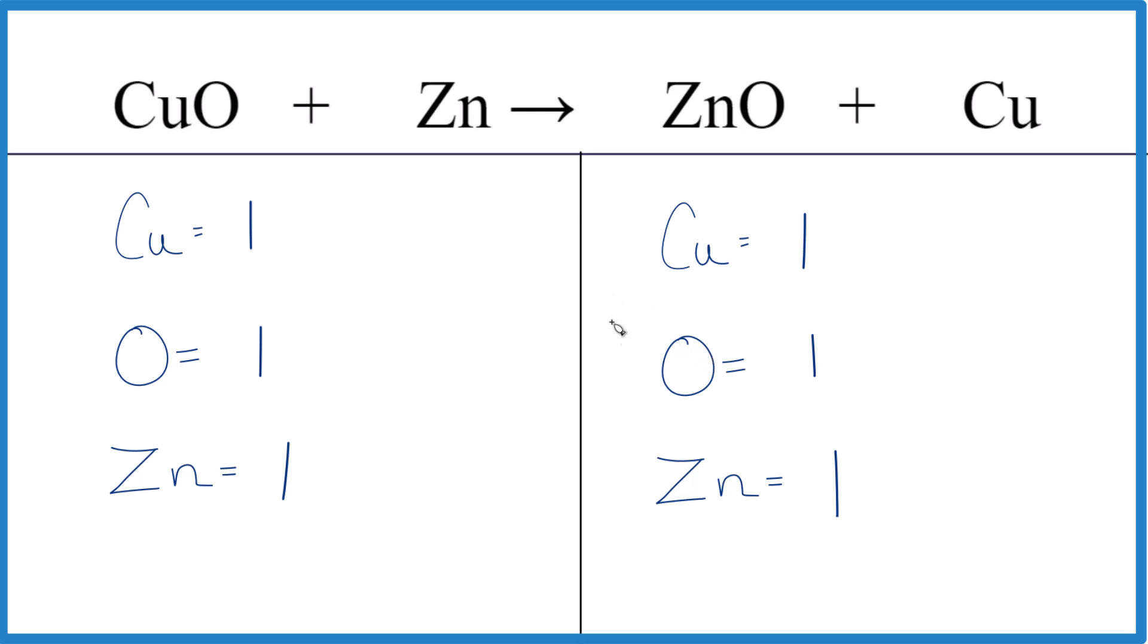If you want to look at it from the perspective of redox, let's write the oxidation numbers in. Oxygen is always minus two. That means the copper is going to be plus two. So this is copper two oxide.